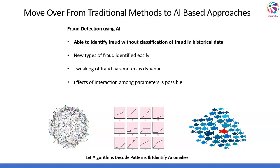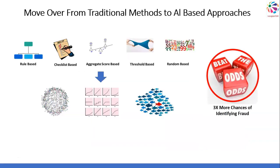With AI, you're able to study the effects of interaction among parameters and able to identify new types of fraud easily. Even in cases where references to fraud are not present in historical data, you'll still be able to analyze and identify fraud — that's the power of AI.